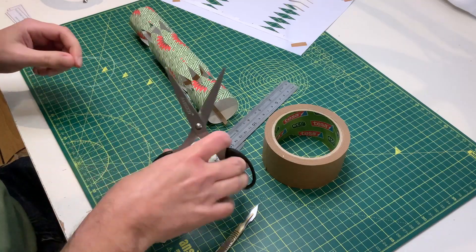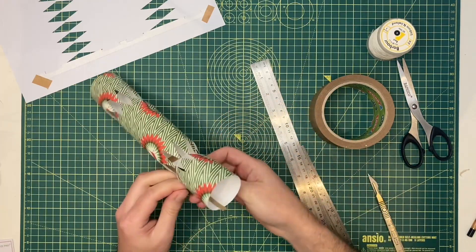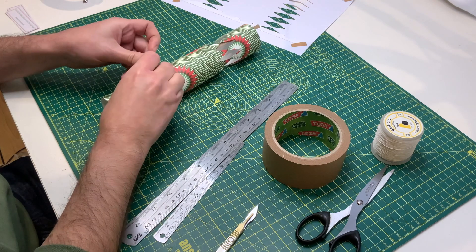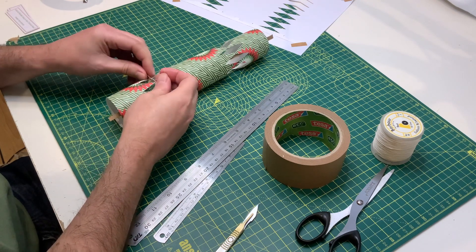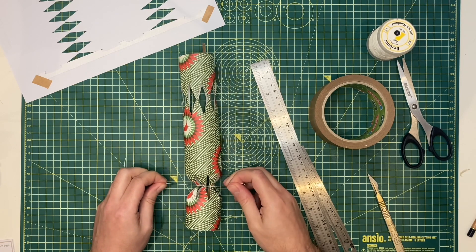At one end of the cracker, wrap the thread around the diamond shapes that you've cut out earlier. Now create a double knot and pull that until it's tight. You can then cut off the excess thread.